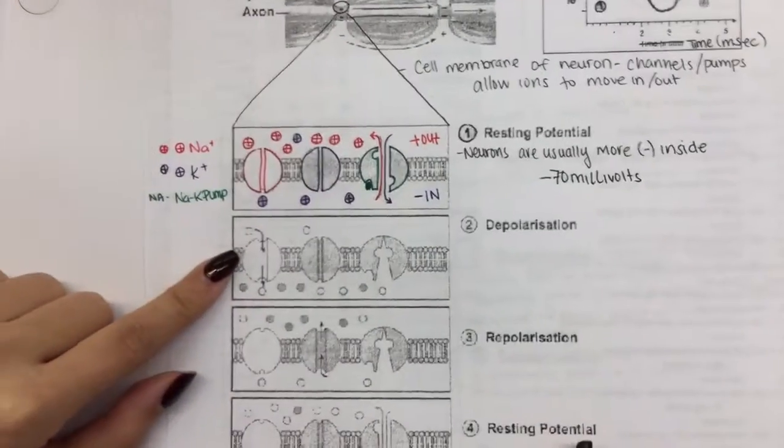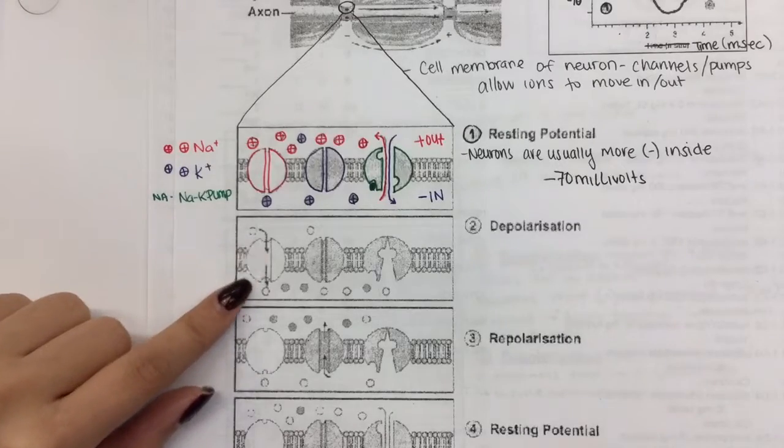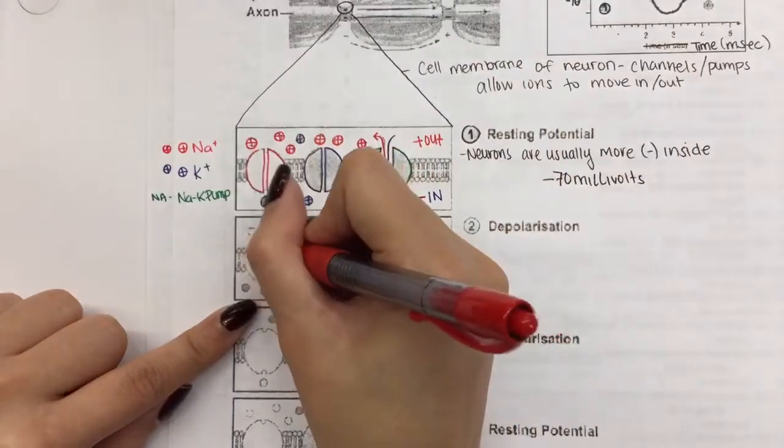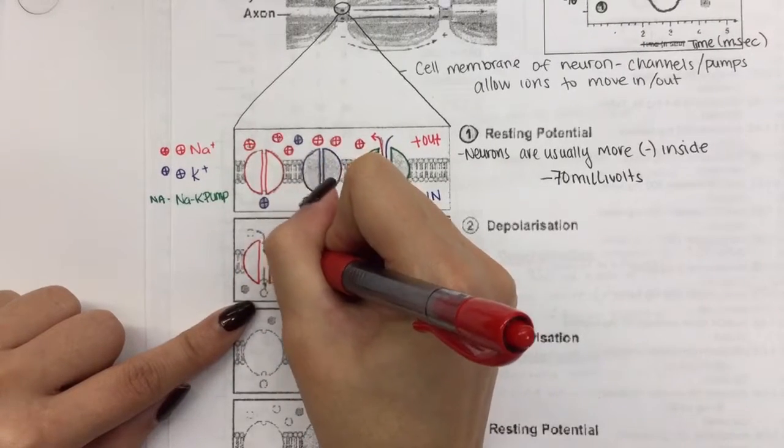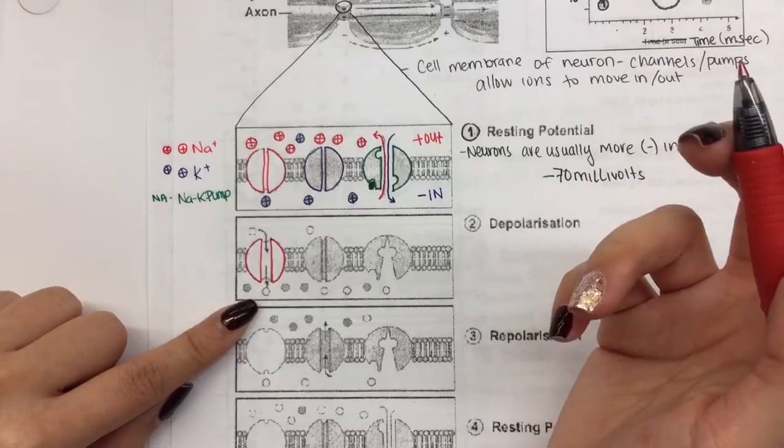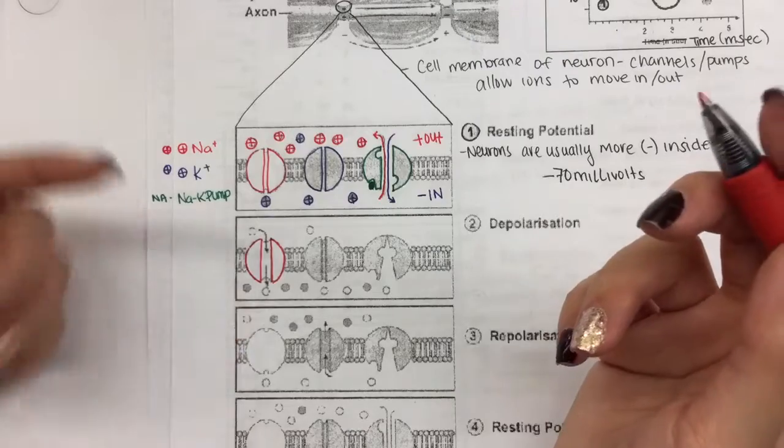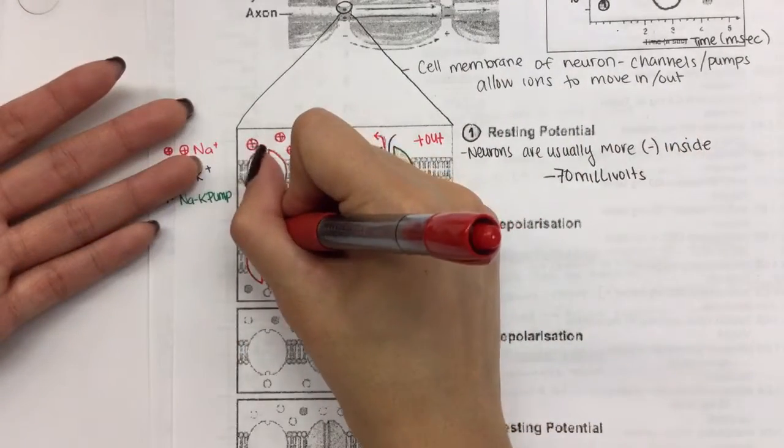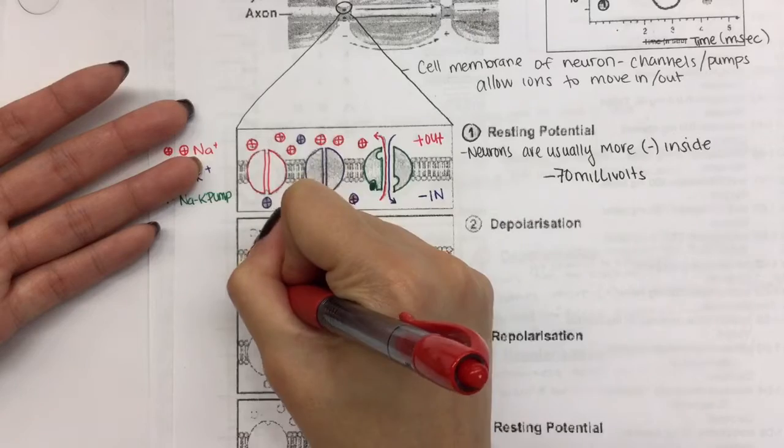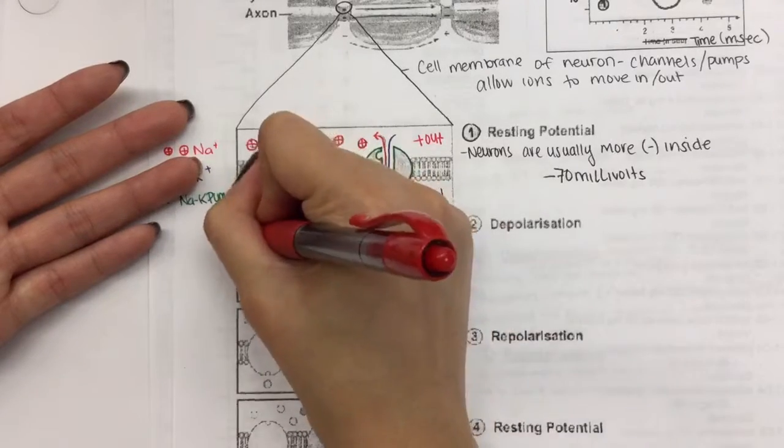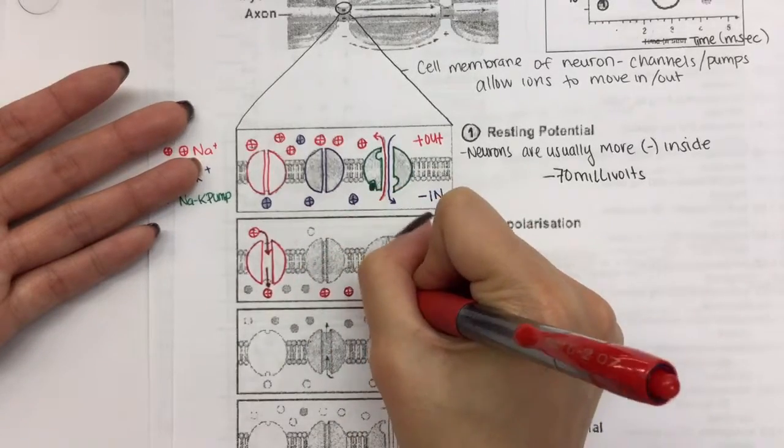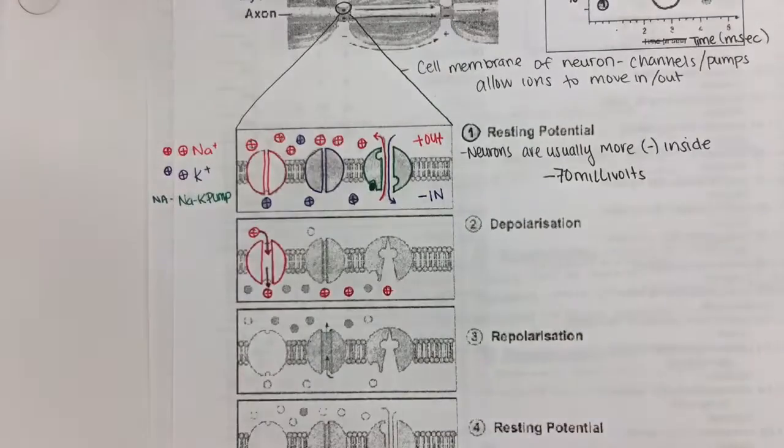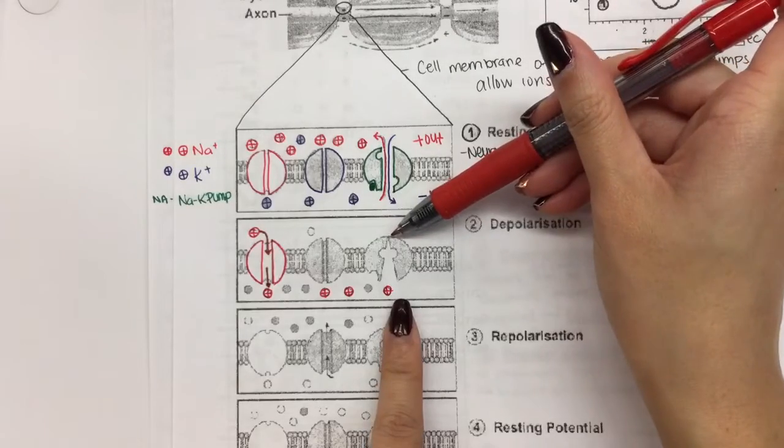In phase number two, what's going to happen is notice the sodium starts flowing into the cell. So I'm going to use my red to outline the sodium channels. And the sodium channels are open when a stimulus occurs. So I'm just going to show sodium will flow into the cell. Notice you have your sodium-potassium pump. It's shut. Nothing goes in or out. The potassium channel is shut. Nothing goes in or out.